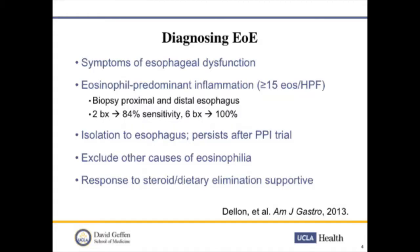EOE is isolated to the esophagus, and it's important that you treat these patients with PPIs to rule out either concomitant reflux or a subcategory called PPI-responsive esophageal eosinophilia. You also want to rule out other causes of eosinophilia such as drug-induced effects, IBD, and certain types of infections. A key marker of this disorder is a response to either elimination diet or steroid therapy.